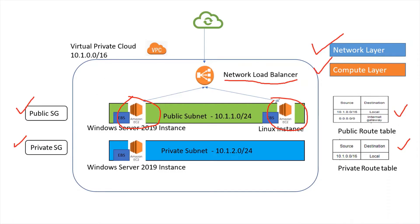This is also an industrial use case where a load balancer is used for sending traffic to a group of instances or web servers — this is our web layer, as discussed in AWS security architectures. One of the use cases is deploying an application using a network load balancer. Let's log into our web console and create a load balancer.